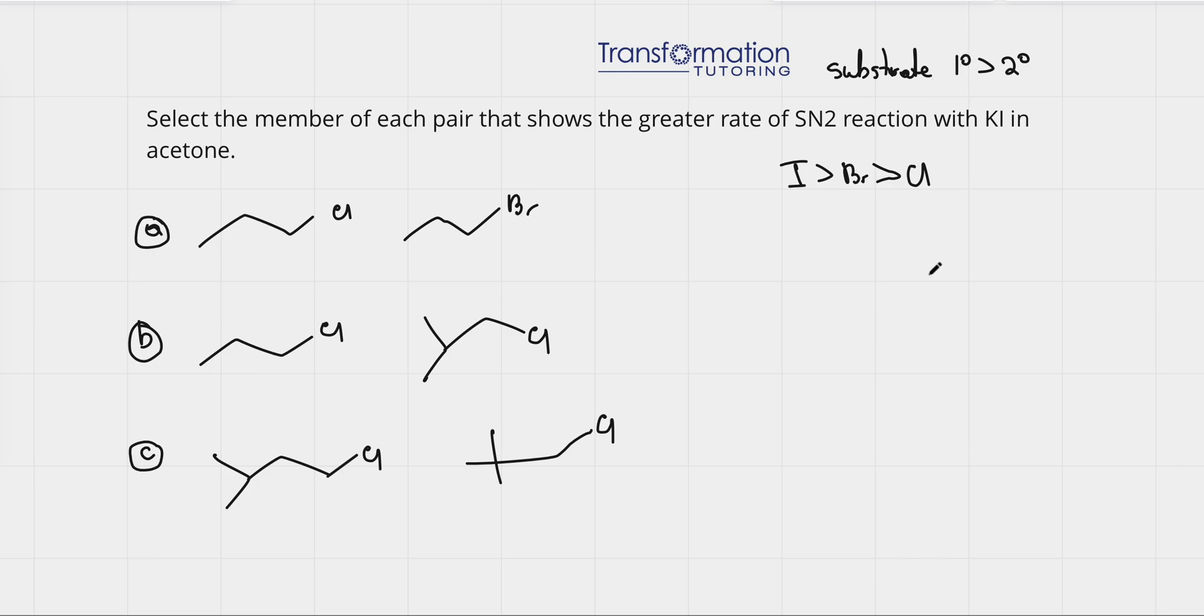What does it mean? So we will have a leaving group, I'm just going to abbreviate it as LG, on a carbon, and we will look at the carbon that's attached to the leaving group. If that carbon is attached to one carbon only, like this, then this is primary. If this carbon is attached to two carbons, it's secondary. If it's attached to three carbons, it's tertiary.